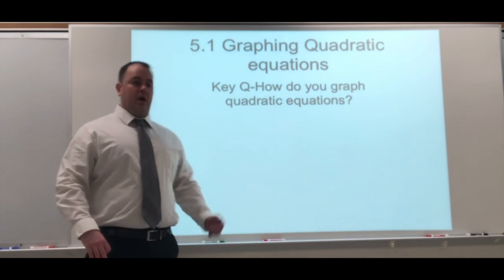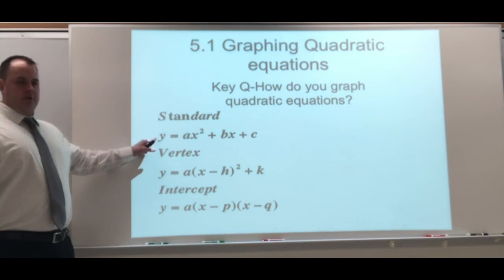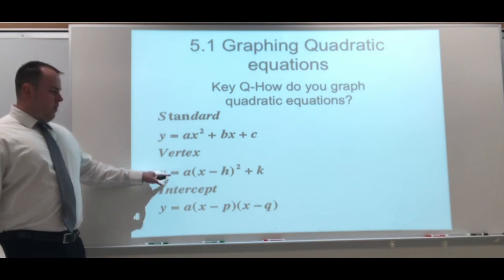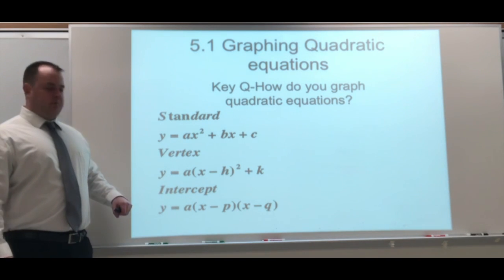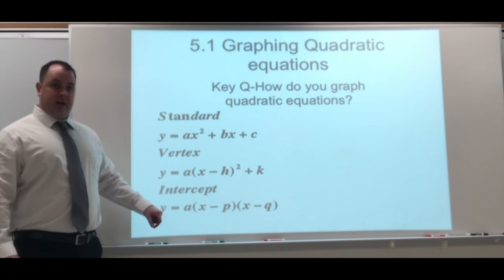There's three forms of quadratics that we're going to look at. We have the standard form, which is the one I think we're going to deal with the most: y equals ax squared plus bx plus c. Vertex form is y equals a times x minus h squared plus k. Intercept form is y equals a times x minus p times x minus q.